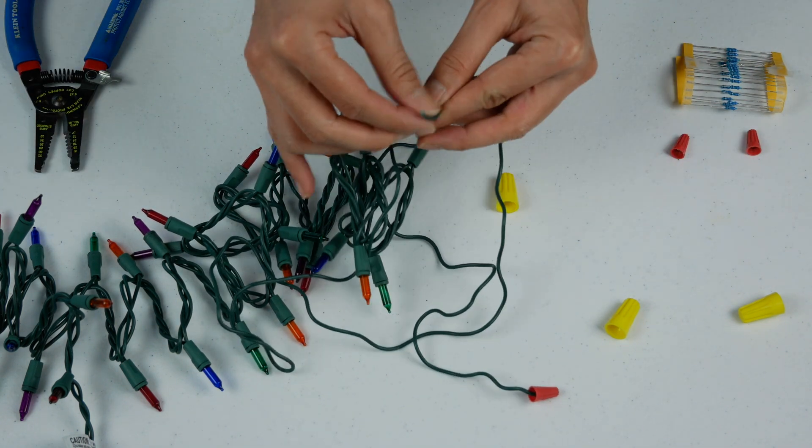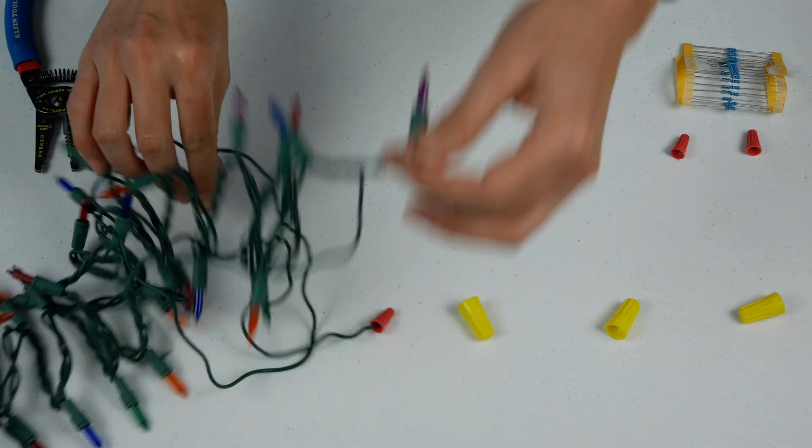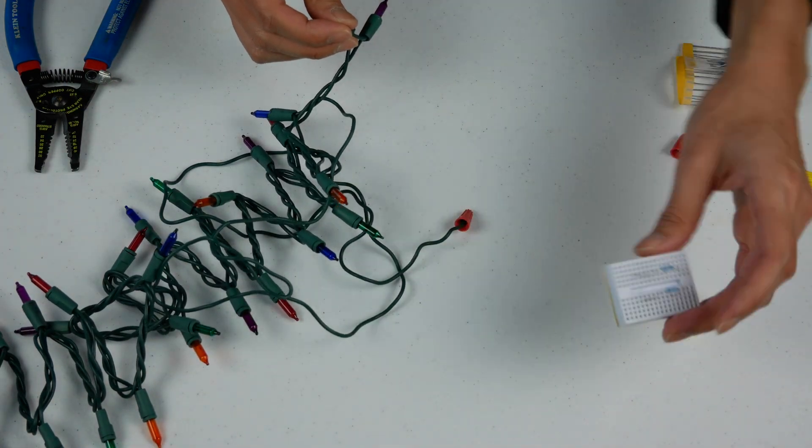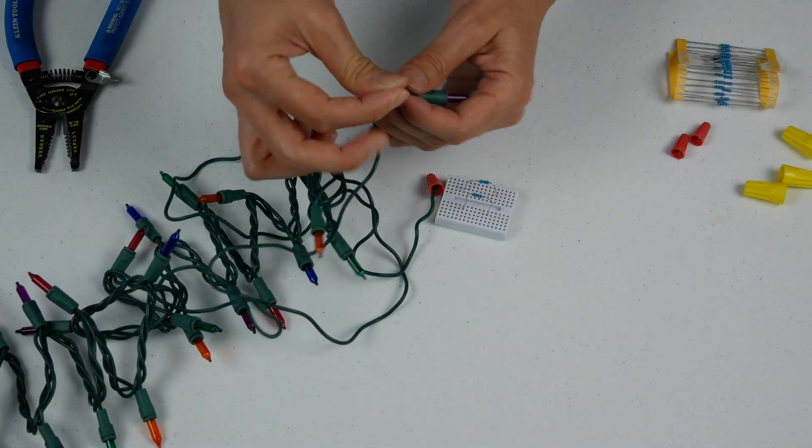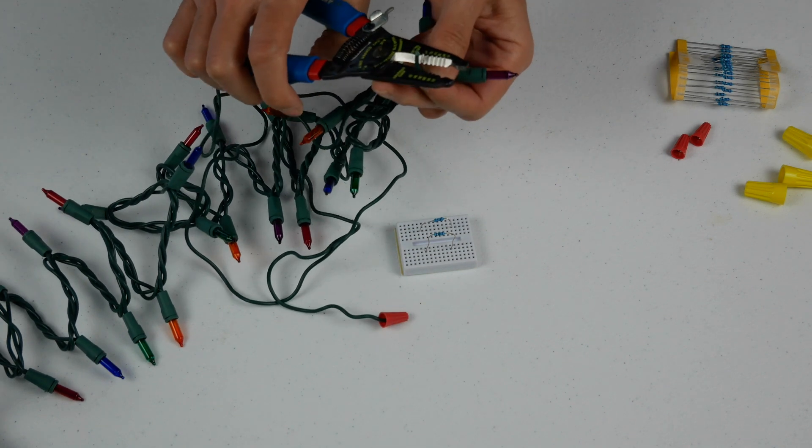Now I need to connect these two together, but I'm not going to just connect these two together. I'm going to use my resistors to compensate for all of these bulbs that I just removed. So let's strip the wires.